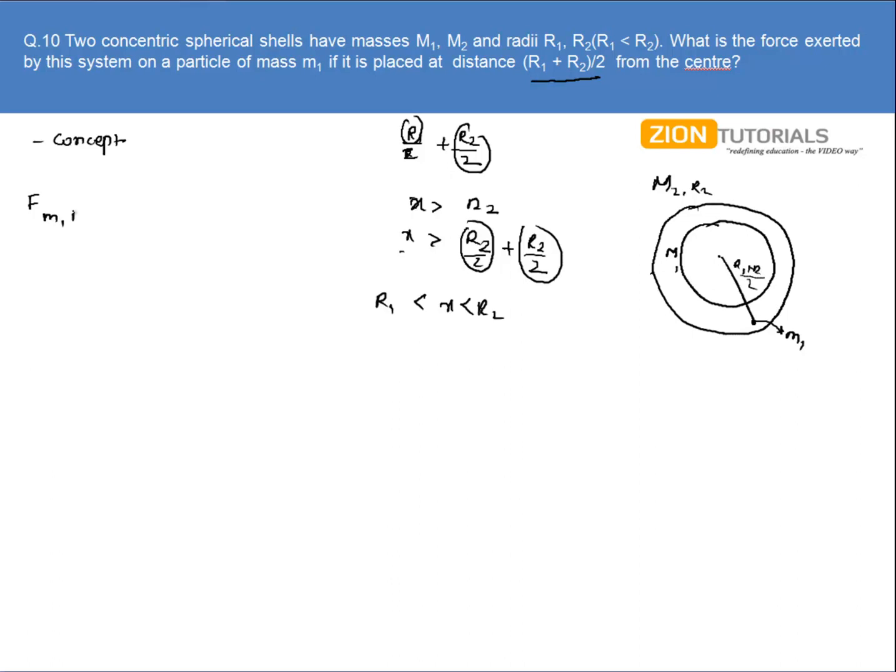So it can be calculated by the formula G × m × M₁ divided by [(R₁ + R₂)/2]² whole square. This is the distance between both of them. So the answer, the net force acting on particle m, is given by 4 times G·m·M₁ divided by (R₁ + R₂)² whole square. That is the answer.